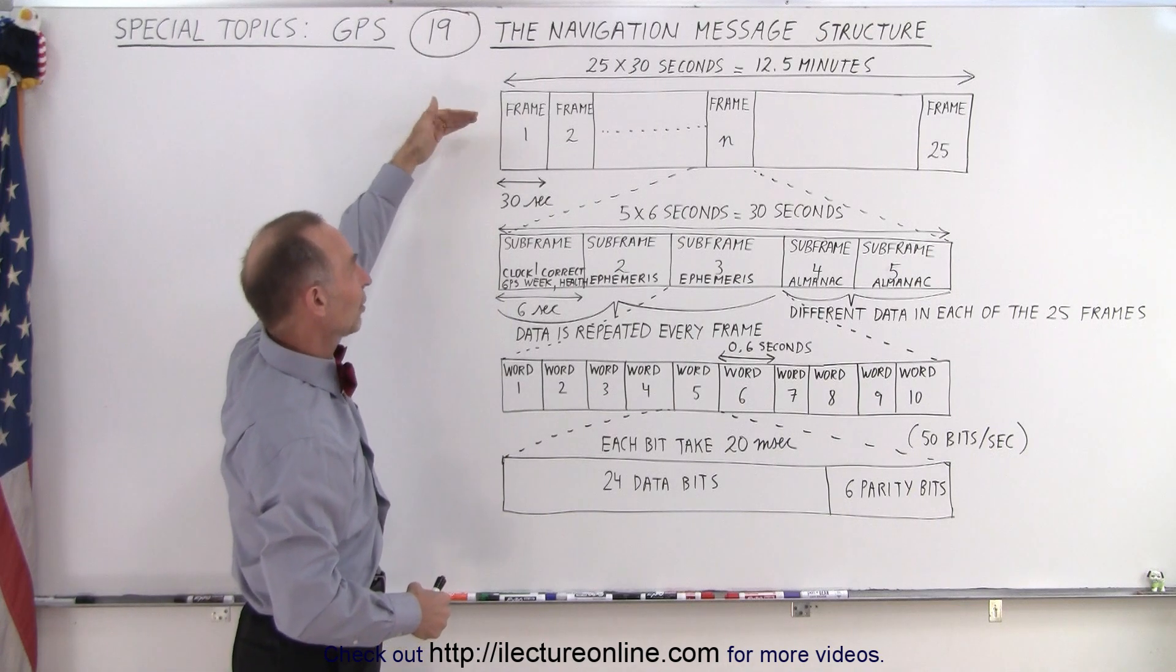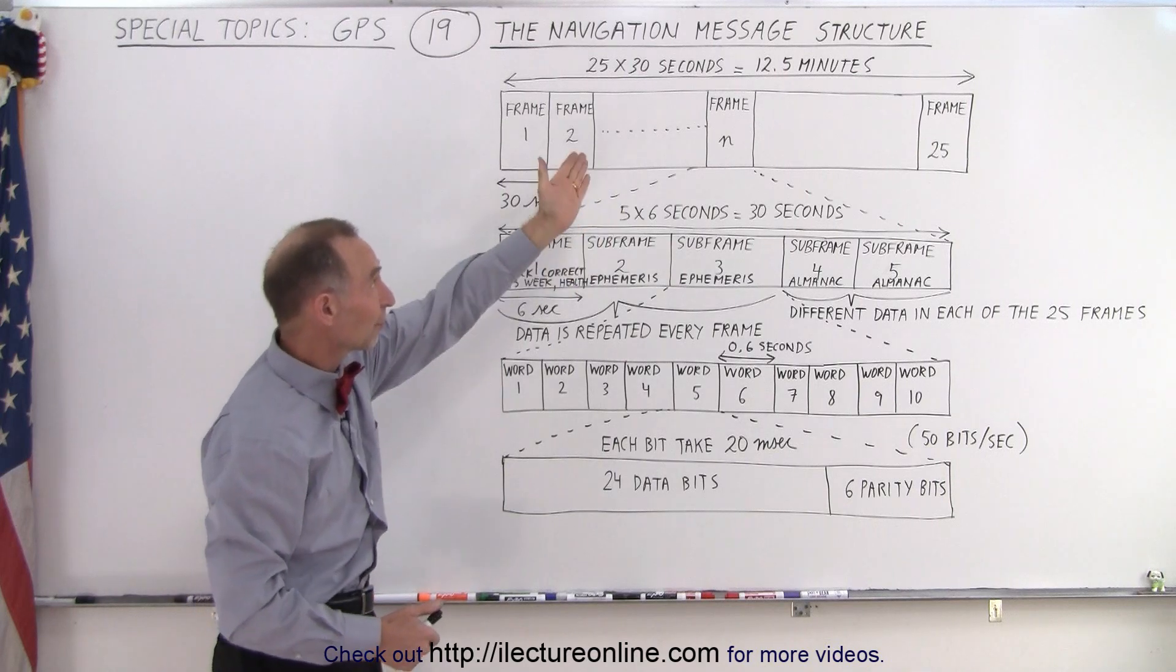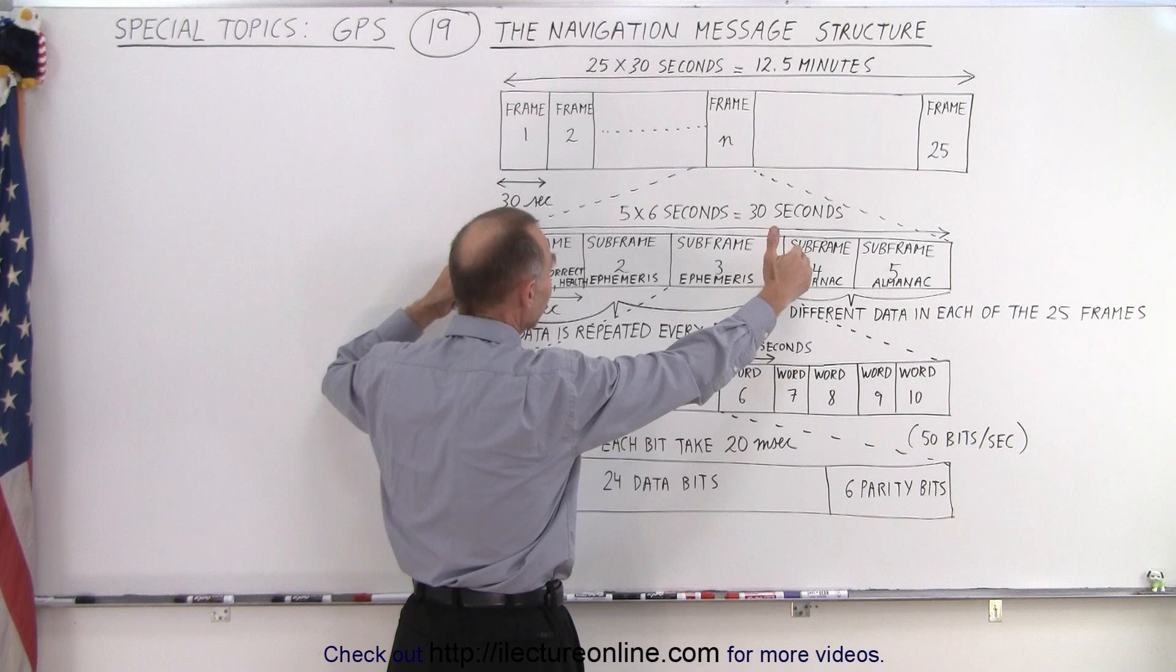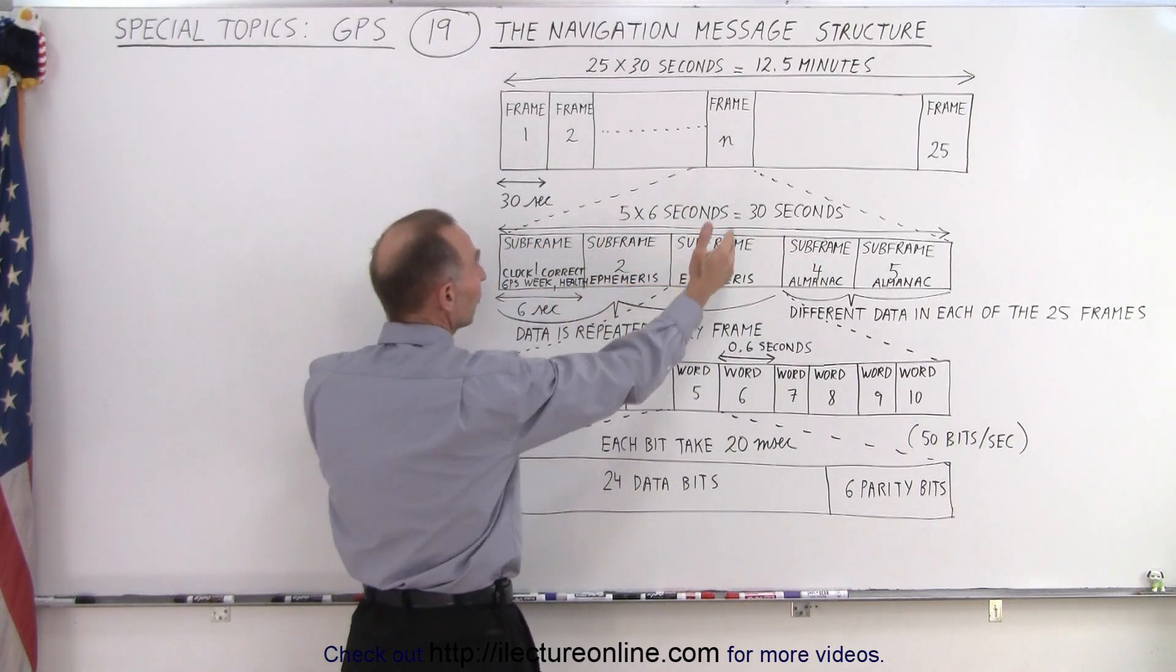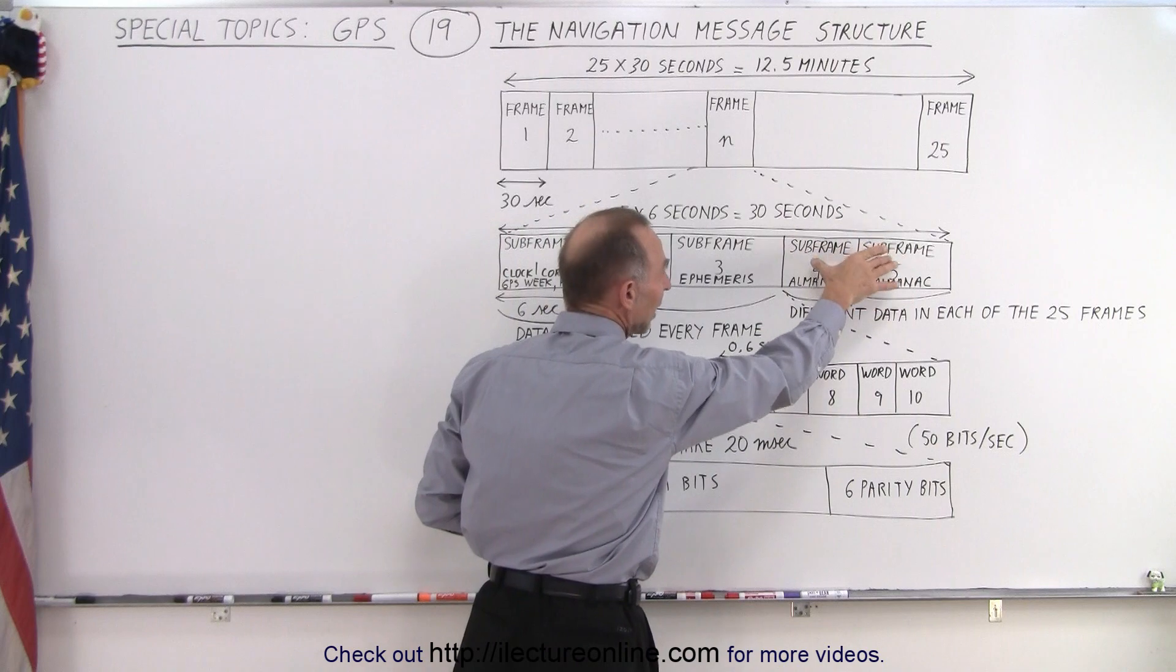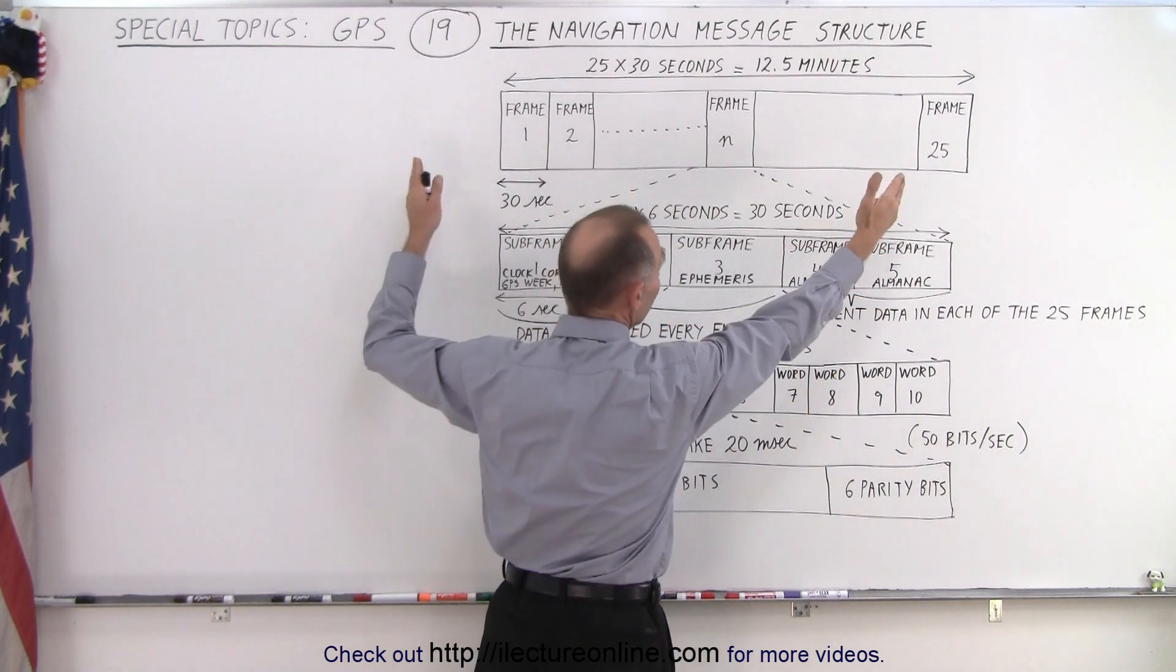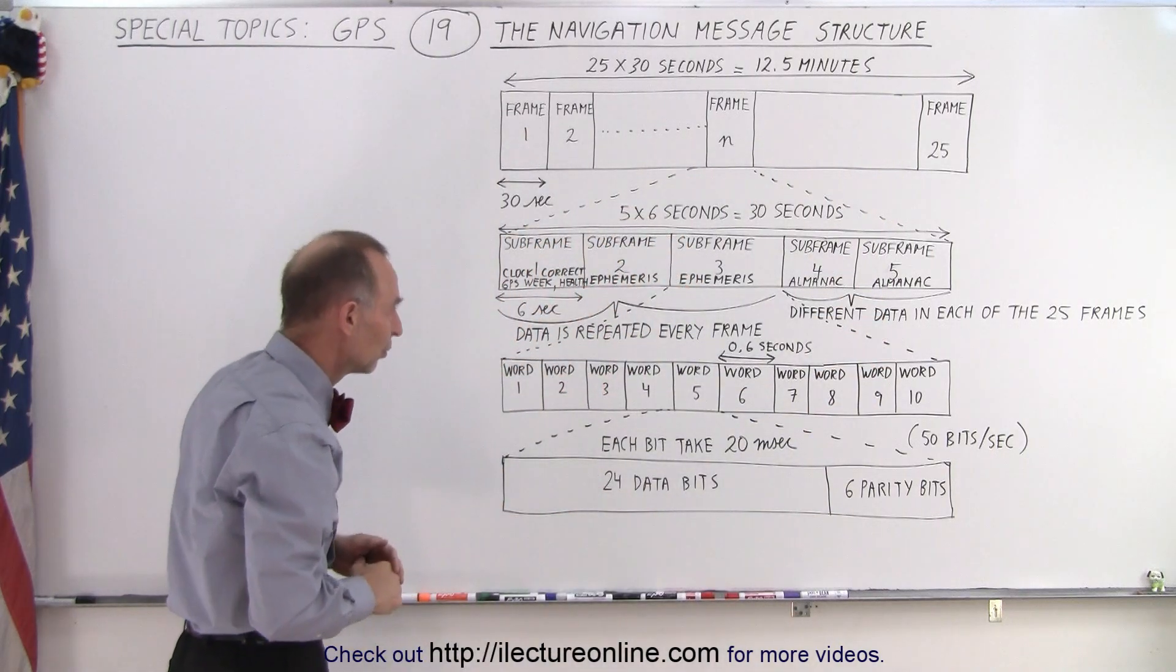So, we have 25 frames to get all the data across. Each frame takes 30 seconds. 25 times 30 is 12 and a half minutes. But the frames are then subdivided into subframes. The first three subframes are repeated every single time, so every 30 seconds they're repeated. But subframes four and five, they're not repeated. It takes 25 sets. And therefore, we need to send 25 frames to get all the almanac data sent down from the satellites to the receivers.